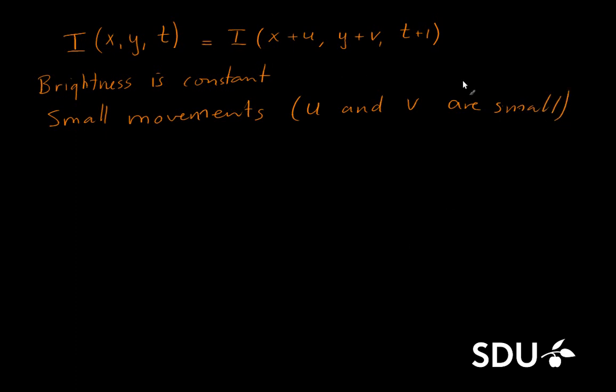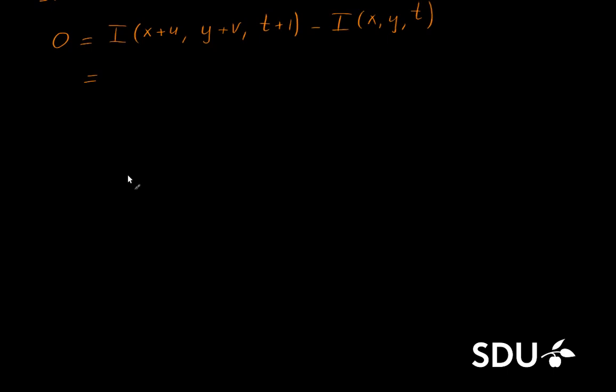And this allows us to simplify this expression somewhat. First, I will rewrite this so we have a 0 over here. And then we will have the right-hand side. So, i of x plus u, y plus v and t plus 1, minus i of x, y and t. And then we can try to rewrite this. And if we use this kind of notation where we have i with a subscript of x, and that means the derivative of the intensity function with respect to x. This will simplify the notation quite much to use this.